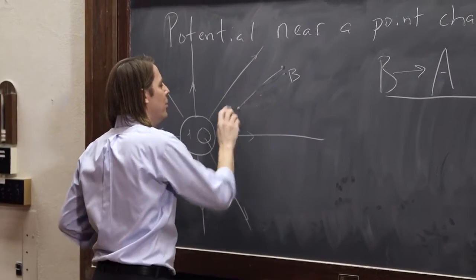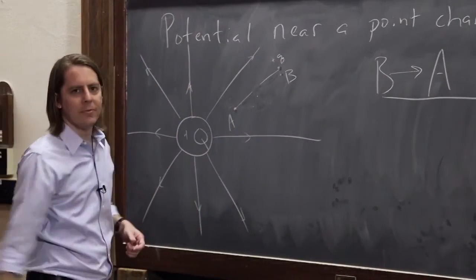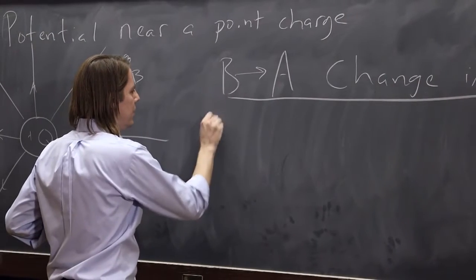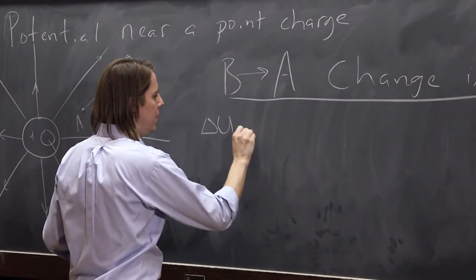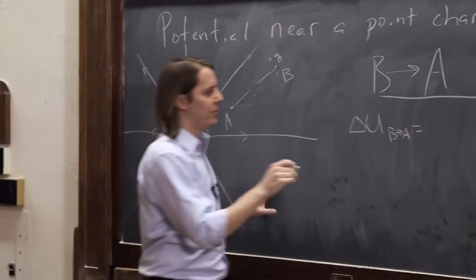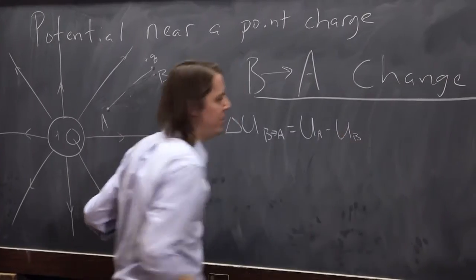We have our plus Q now sitting here going that way from B to A. So, what is the delta U? So, delta U B to A, as we said before, that's the final minus initial. So, it's the energy at A minus the energy at B.